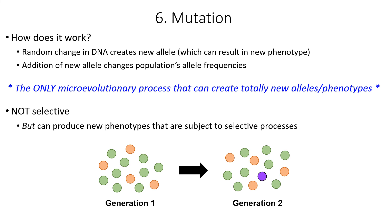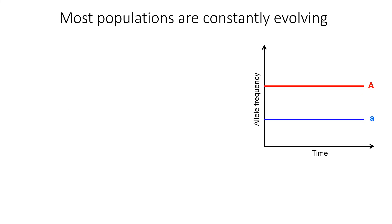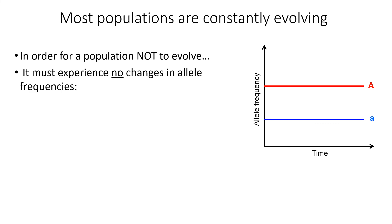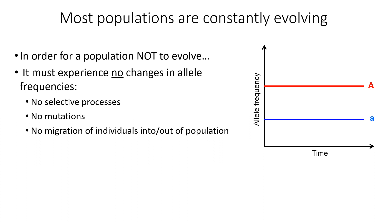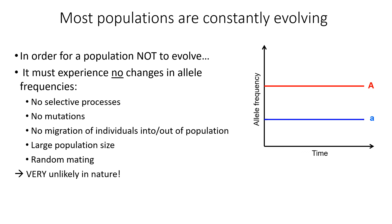Those are all six microevolutionary processes. Most populations in nature are undergoing several of these processes at any given time. In order for a population not to evolve, it must experience no changes in allele frequencies. For this to happen, there must be no natural selection, no artificial selection, no sexual selection, no mutations bringing in new alleles, no migration of individuals into or out of populations, a large population size so that random changes don't shift allele frequencies, and random mating. It's very unlikely for all of these things to occur in nature simultaneously, so most populations in nature are always evolving in one way or another.